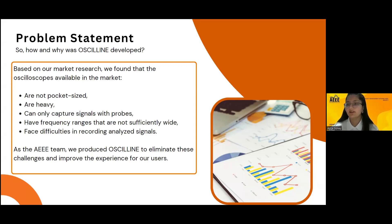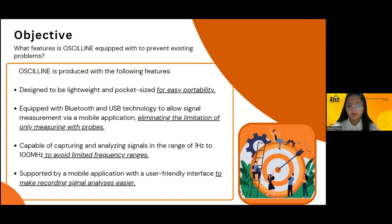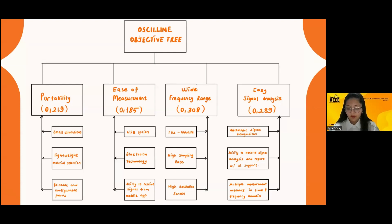Ossiline additionally gives users a chance to improve their usage of an oscilloscope. Ossiline is designed to be lightweight and pocket-sized in order to achieve portability. Ossiline is equipped with both USB and Bluetooth technology, providing a connection experience that is consistent and undisturbed. Ossiline captures signals from 1 Hz to 100 MHz, addressing the small frequency range limitation. A user-friendly interface is used. Before making the objective tree, we researched and weighted the properties. The most important property is wide frequency range, followed closely by easy signal analysis and portability. The least important was the connectivity features — USB, Bluetooth, and mobile app.